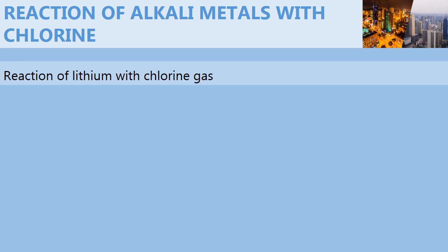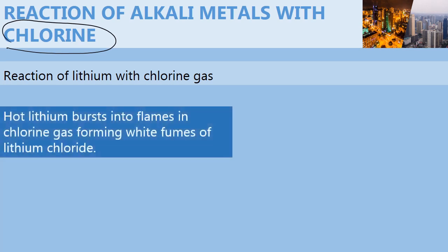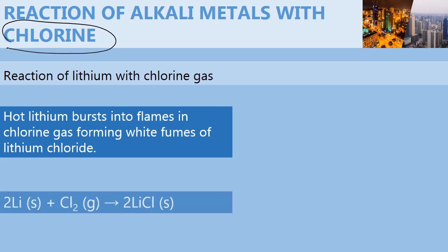Next we have the reaction with chlorine. For lithium, hot lithium bursts into flames in chlorine gas, forming white fumes of lithium chloride. The equation for the reaction: lithium reacting with chlorine gas gives lithium chloride.